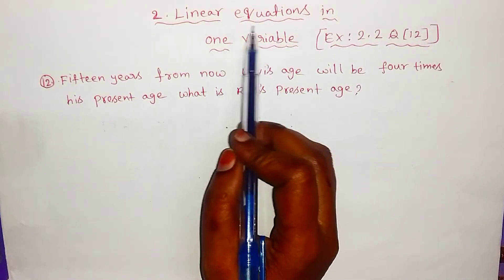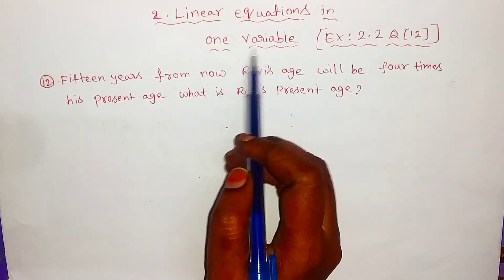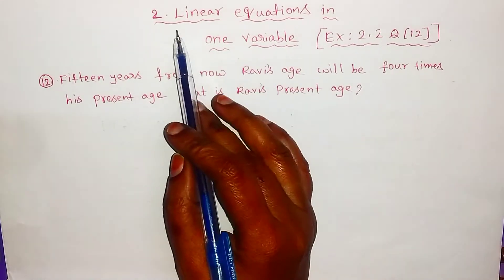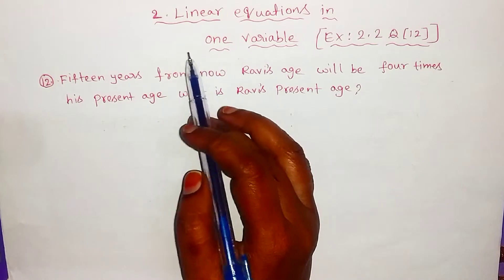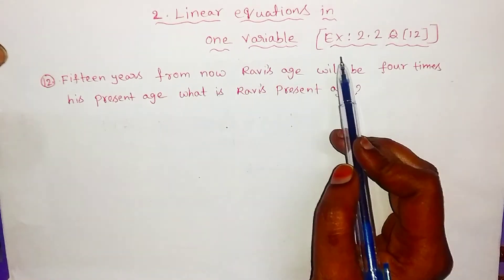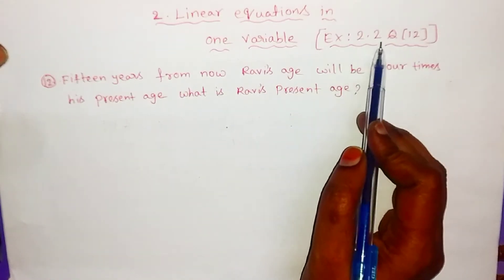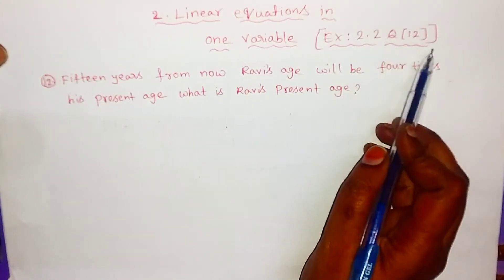Linear equations in one variable. Second chapter. Exercise number 2.2. Question number 12.